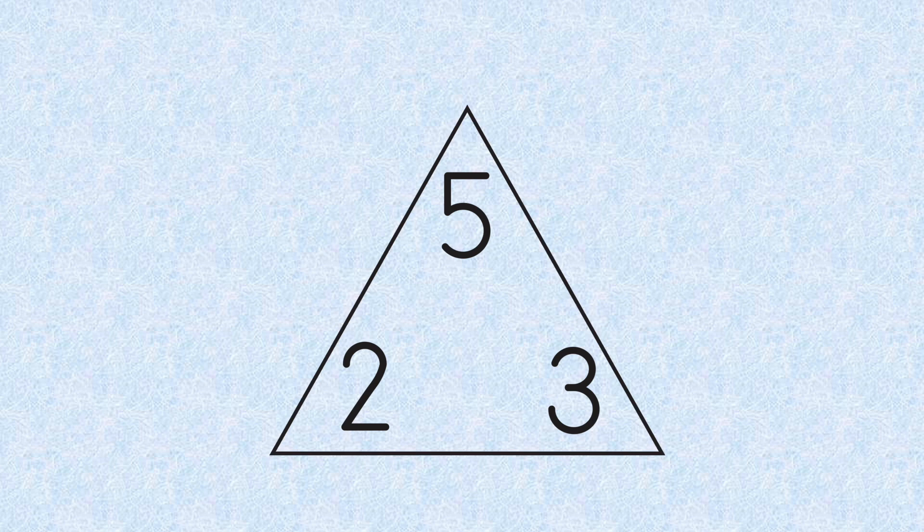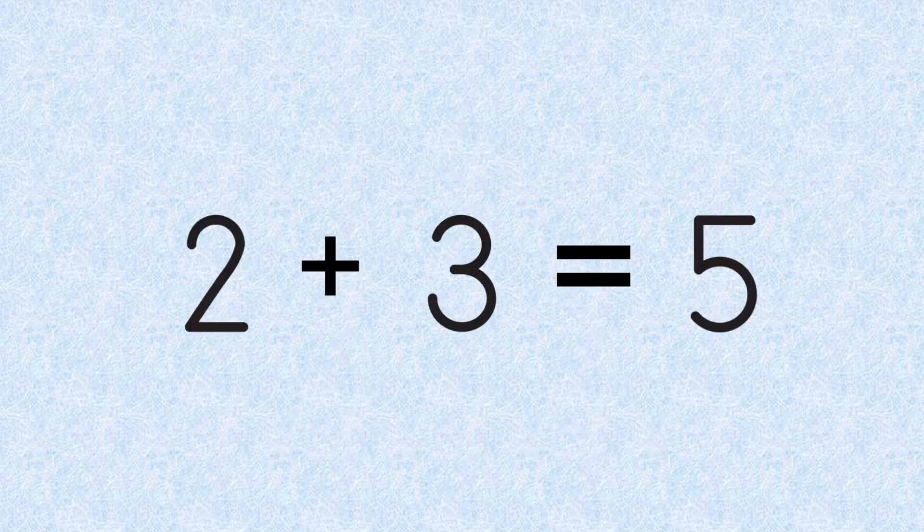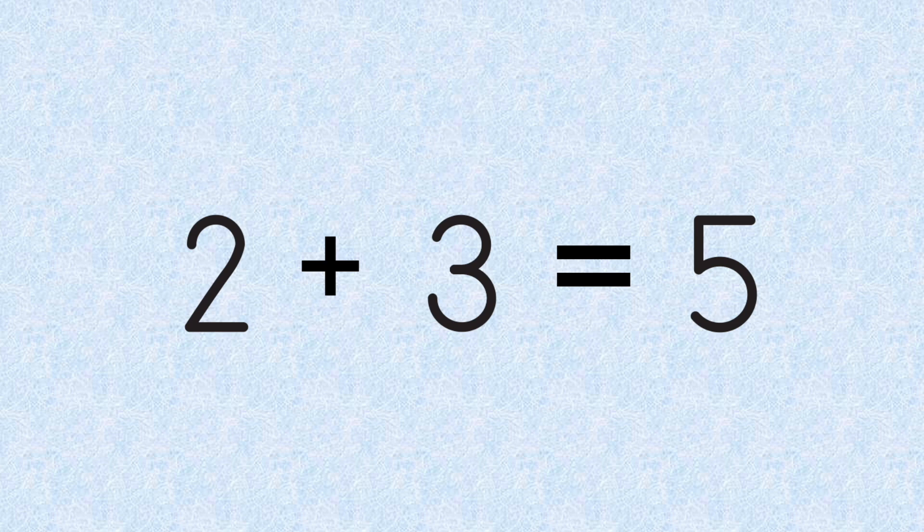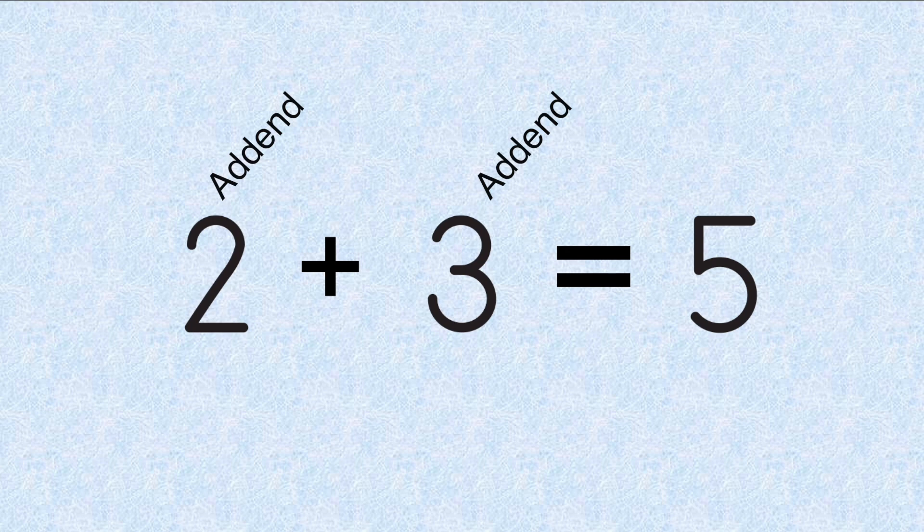Let's do addition facts first. So here's an example addition fact: 2 plus 3 equals 5. Each number in the number sentence has a special name. The numbers being added are our addends. On our triangle, they will be at the bottom. The answer is called the sum. The sum is at the top of the triangle.